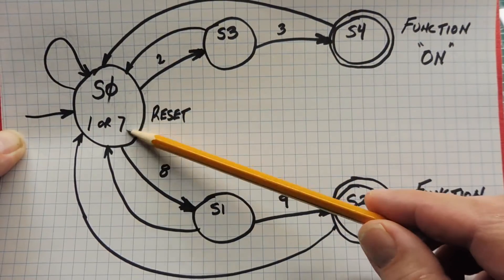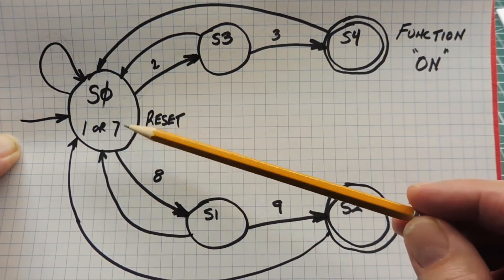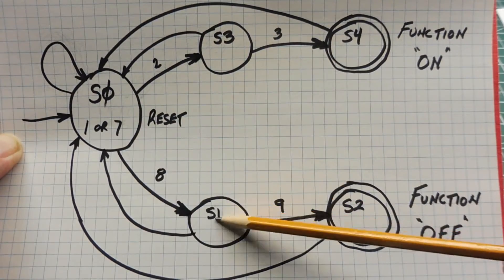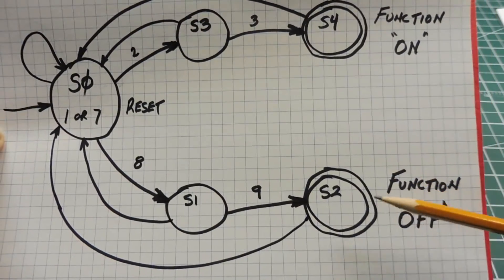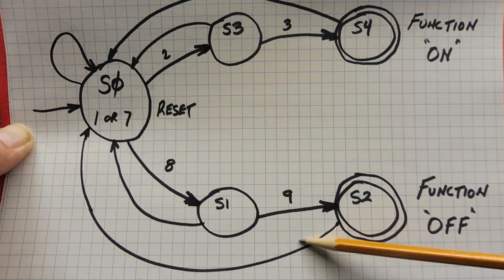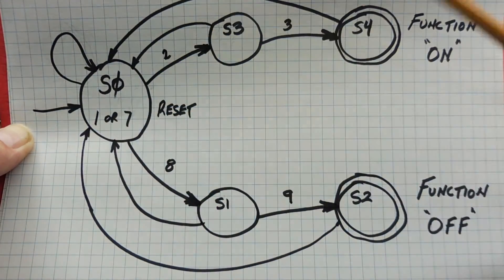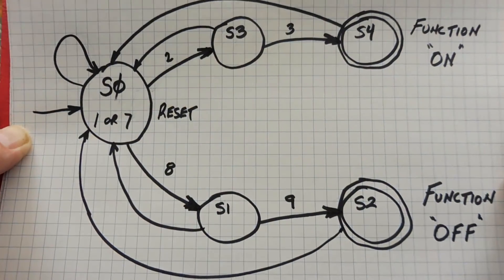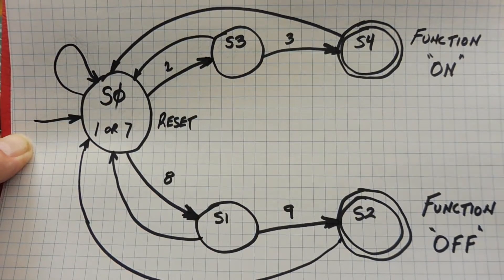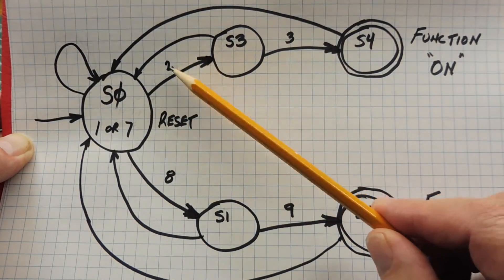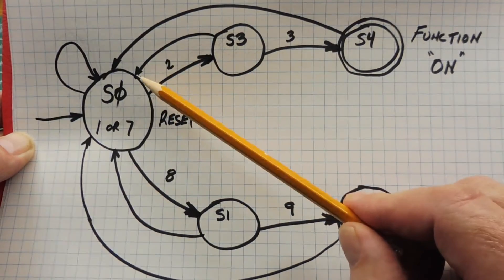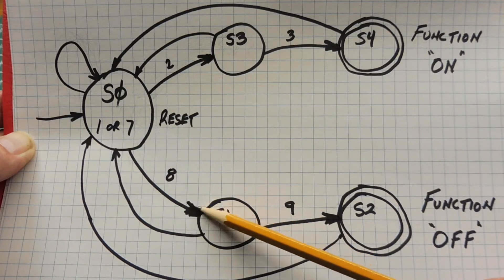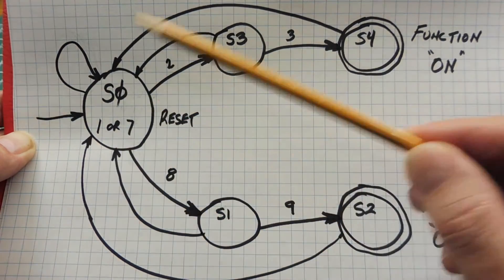Now it's looking for a 7. If it gets a 7 in state 0, then state 1 will be looking for an 8. And state 2 will be looking for a 9, which will trigger function off — the accepting state. Then it will go back to state 0 for a reset. Any time a wrong digit is entered — say instead of a 2 it gets a 4 — it will go back to the reset state, state 0. Same for the other path: if it's looking for an 8 and gets a 4, it will go back to the reset state.